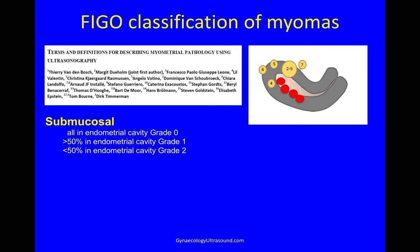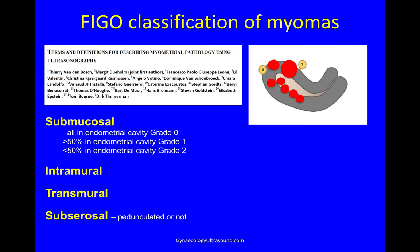An intramural fibroid is a fibroid surrounded by myometrium on all sides, but you can also have a transmural fibroid, and this is again very useful information for a surgeon. Subserosal fibroids are in contact with the serosa — either a little bit, a lot, or they can be pedunculated.